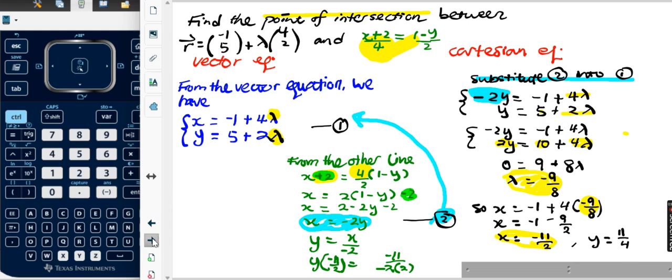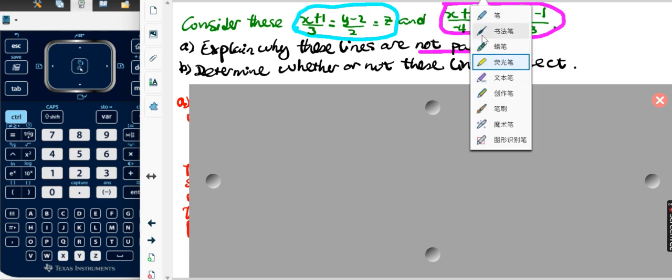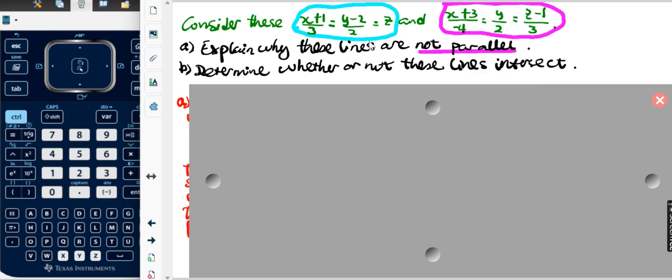Now let's look at another problem. Consider these equations. Here we have two lines, both in Cartesian form. Explain why these lines are not parallel to each other.